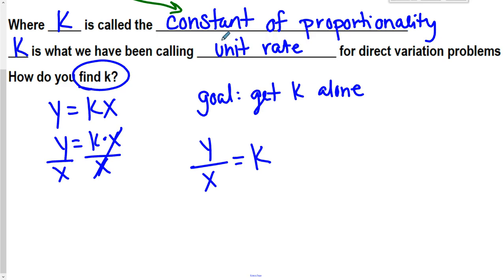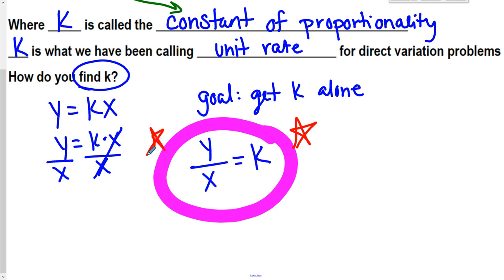So y over x is equal to k. Now I kind of showed you how I solved it, but this right here is extremely important. So highlight it, star it, whatever you want to do right here, because the fact that we know to find k, we're going to need to take y and divide it by x, and it has to be y over x. So k is not equal to x over y. It does have to be y over x, not x over y. That is extremely important.